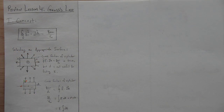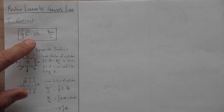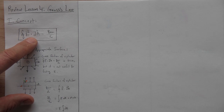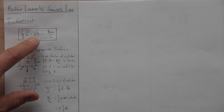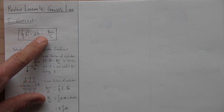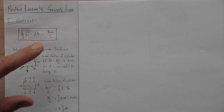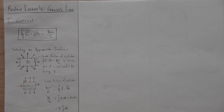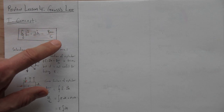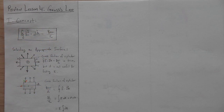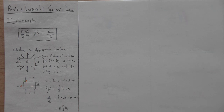Gauss's Law says that the electric field integrated over a closed area — the flux — is equal to the net charge enclosed in that surface over epsilon zero. Everything in this equation is important. Omitting any symbol changes the mathematical meaning radically. If you leave off the vector signs over E and dA, or the circle in the integral, that changes the mathematical meaning of that sentence.